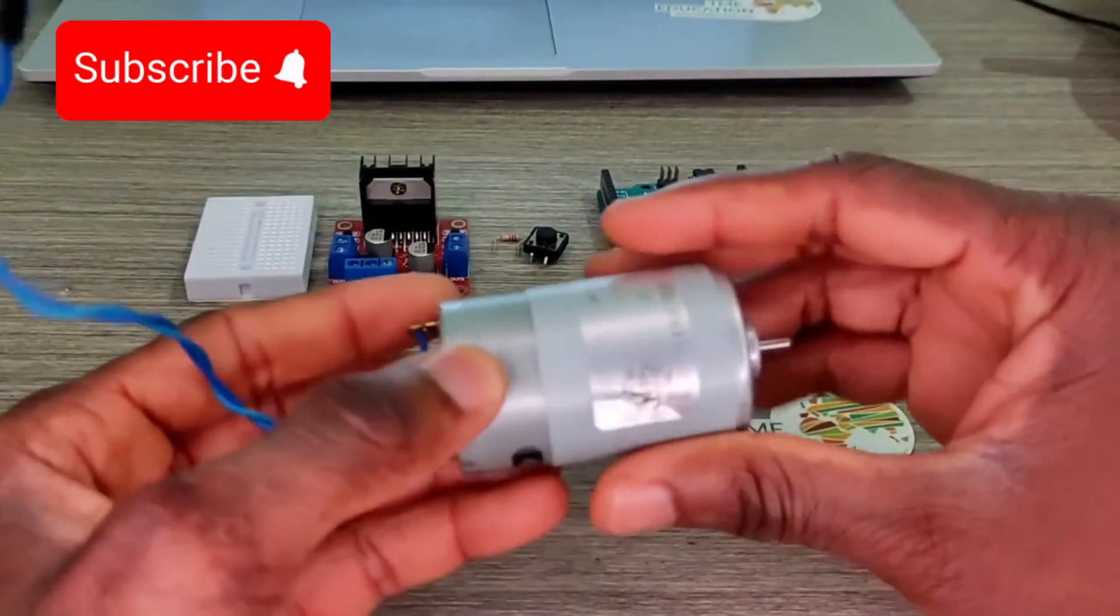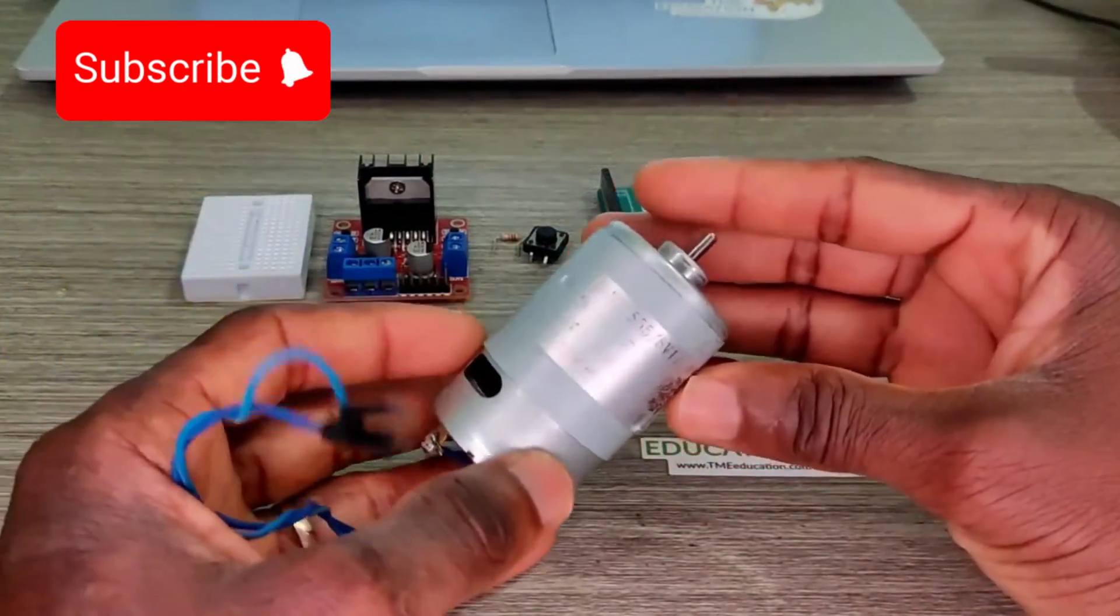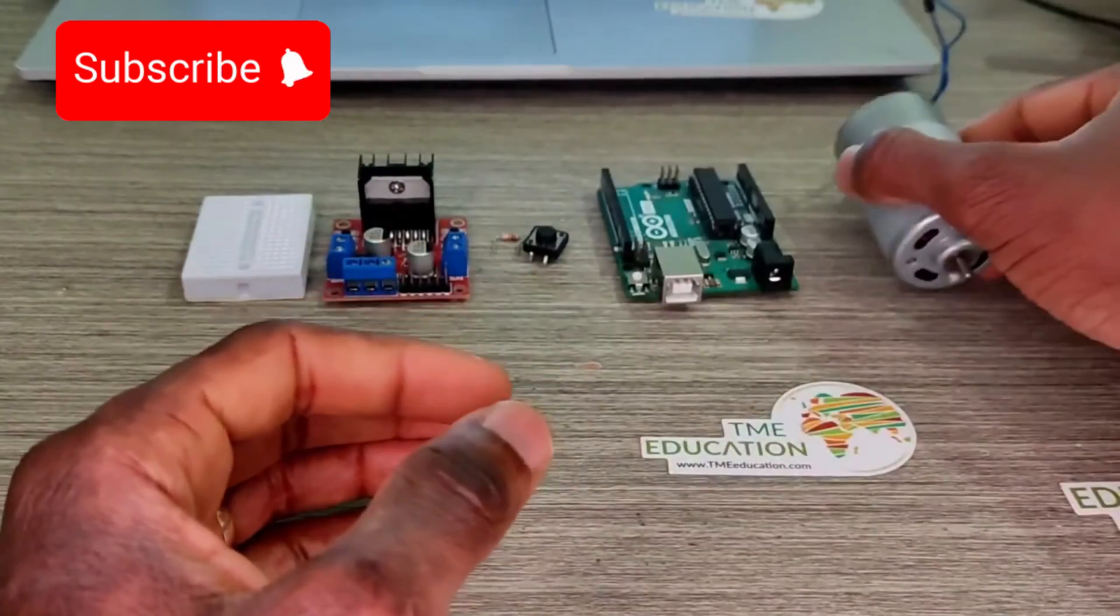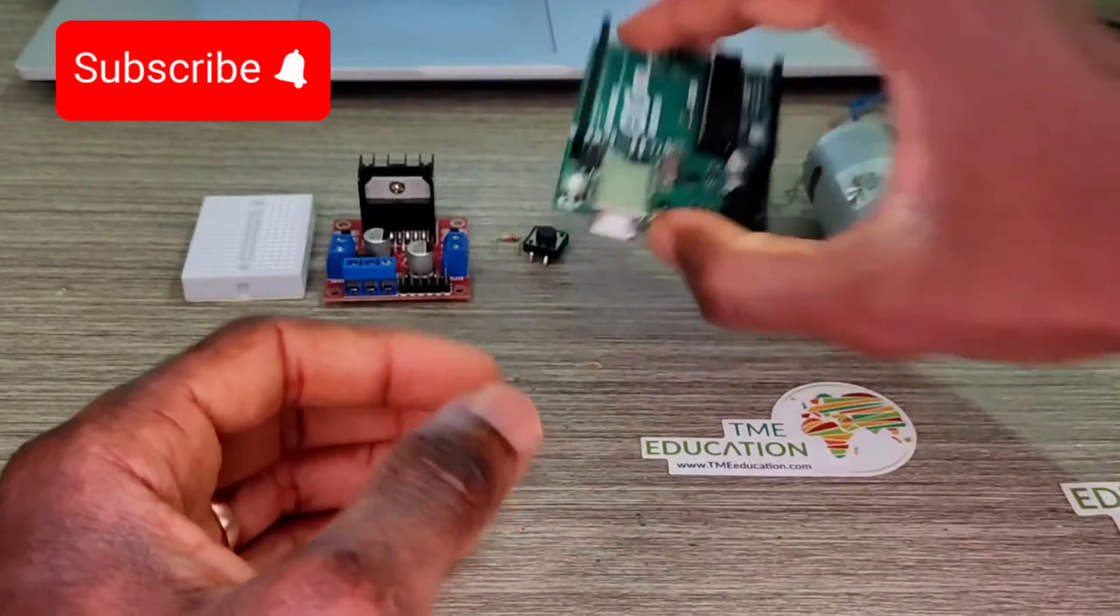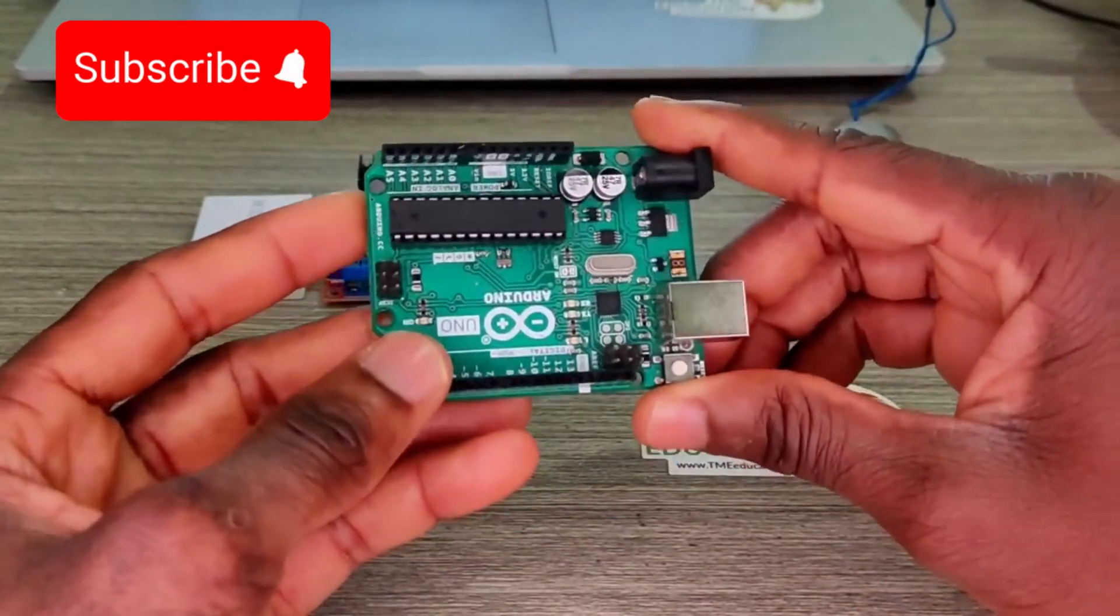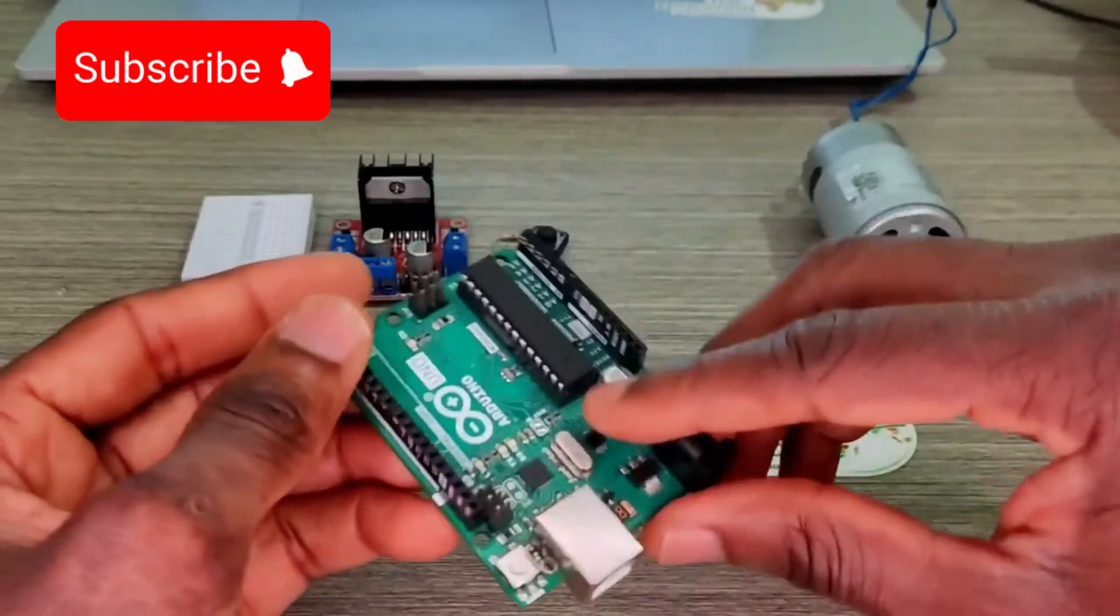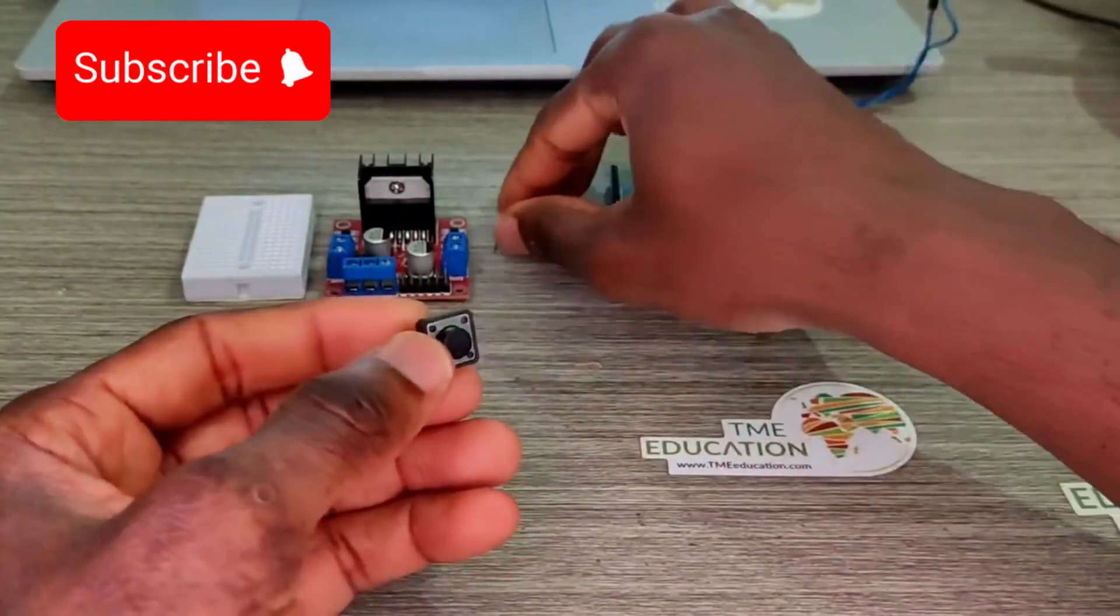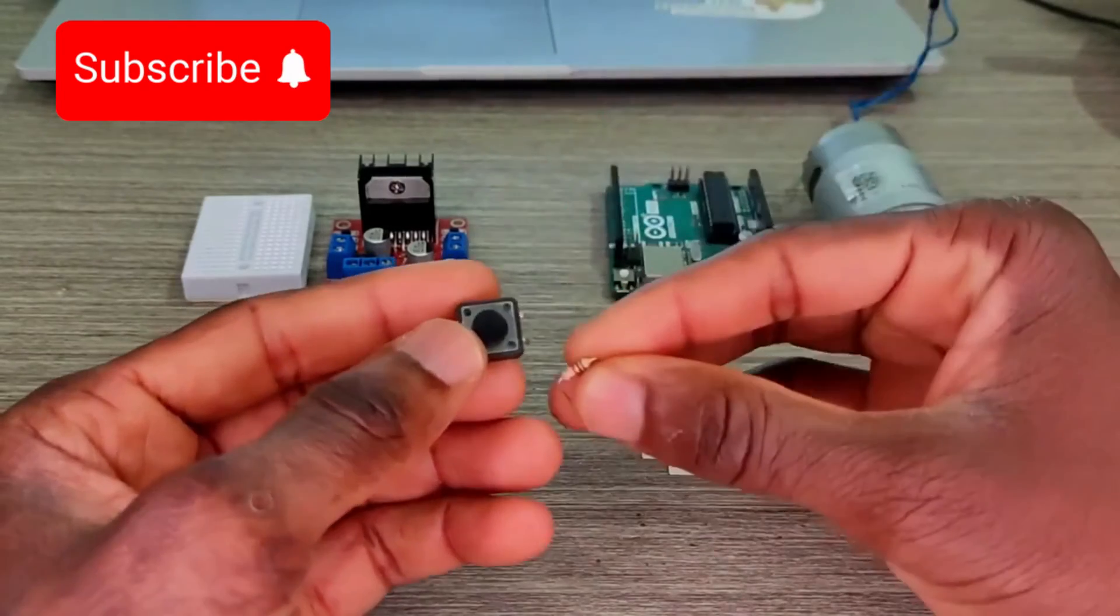So this video is about controlling this 6V DC motor with Arduino Uno using a push button. We're going to have a pull-up resistor, a 10k ohm resistor, and we're going to increase the speed.